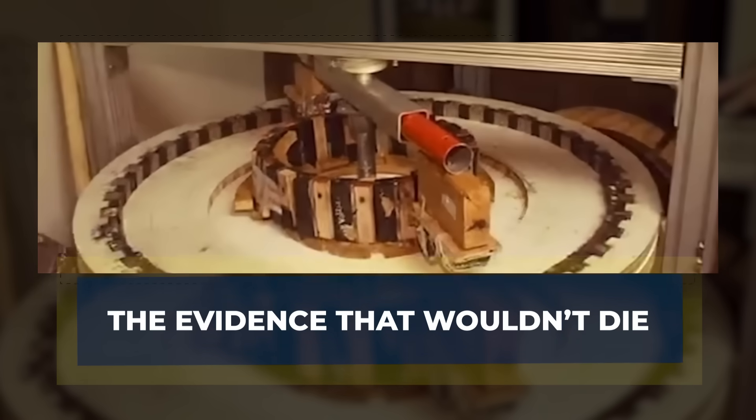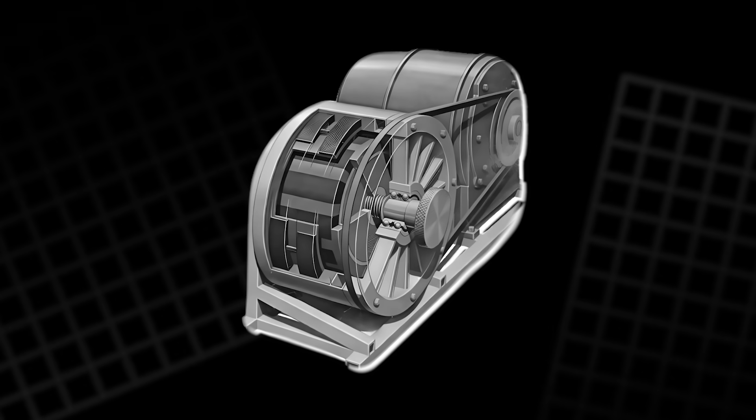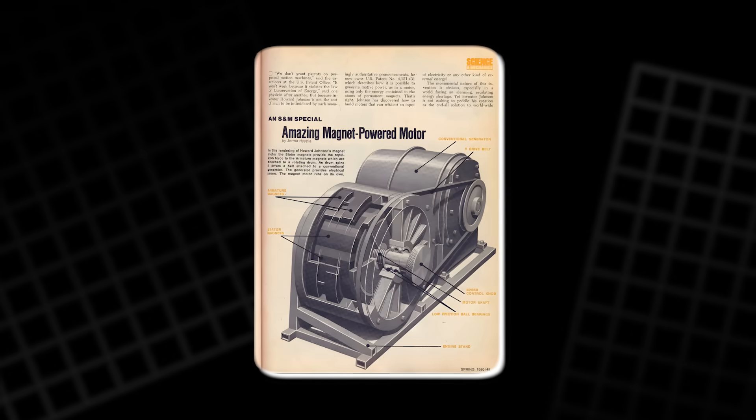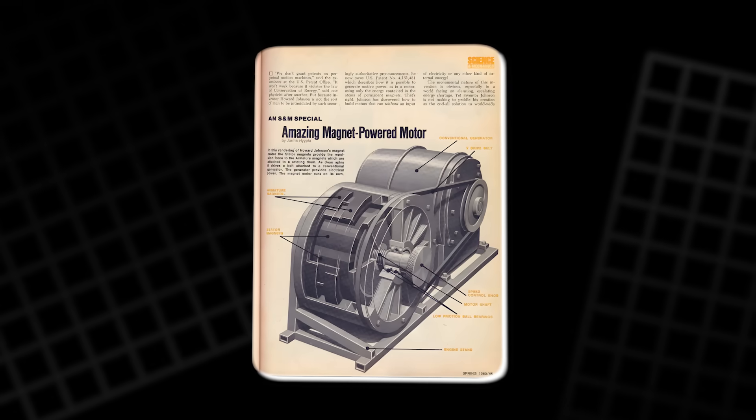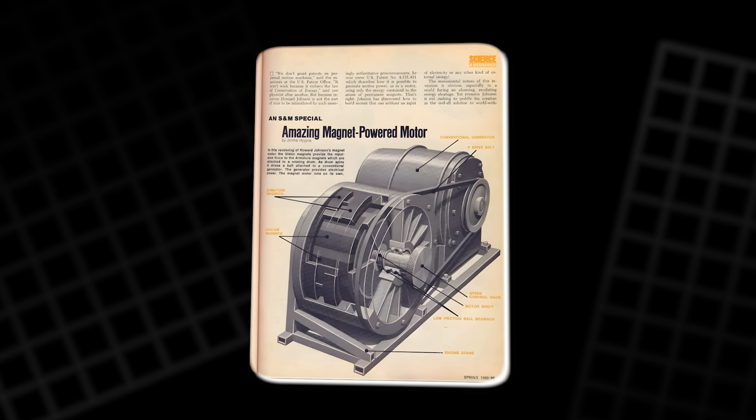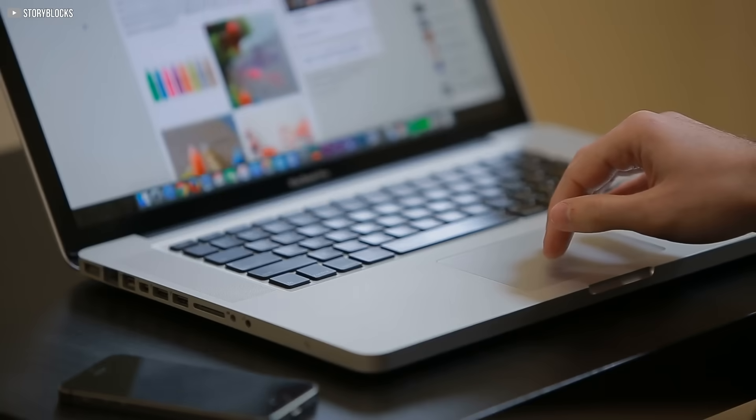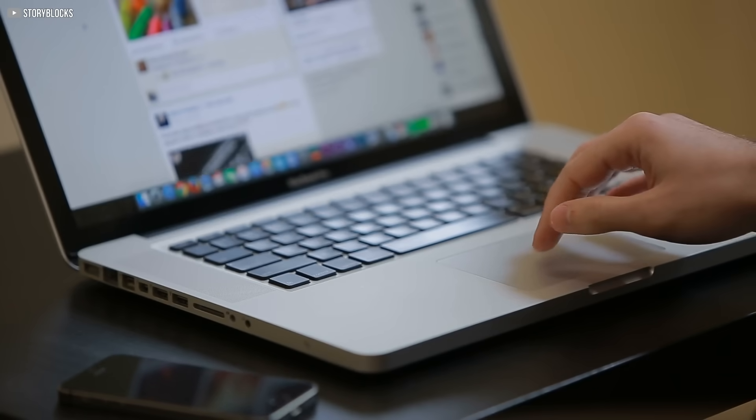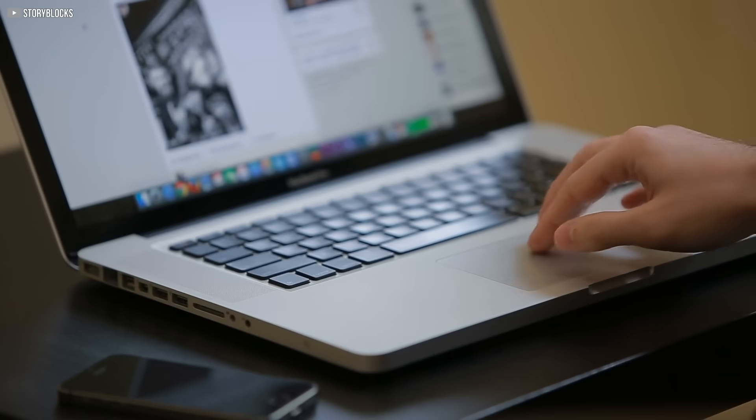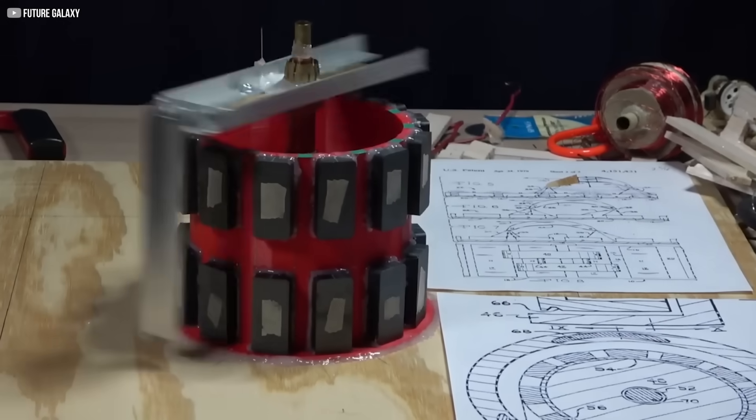The evidence that wouldn't die. They tried to erase Howard Johnson's work. But some truths are harder to kill. His US patent remains public to this day. A legal document detailing exactly how his magnetic motor functioned. Not theory, not a myth. Real designs with precise magnet placements and technical specifications anyone can study. And when the Internet arrived, everything changed. No longer confined to dusty files, Johnson's blueprints began to spread.